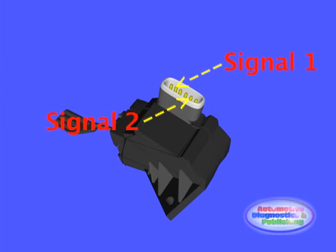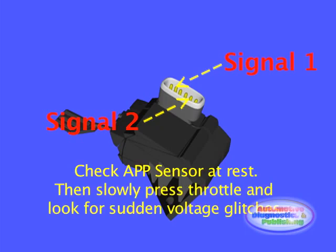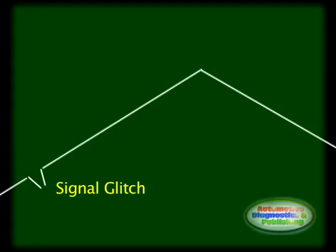With the scope connected, check the output signals with the APP sensor at rest and compare to proper specifications. Then slowly press on the accelerator pedal and observe for any glitches or sudden drops in signal voltage. This procedure is somewhat similar to checking a TPS sensor, except that it is a dual or triple TPS depending on the manufacturer.